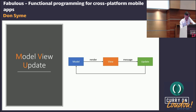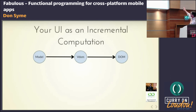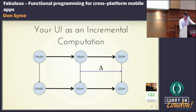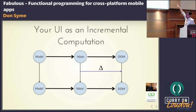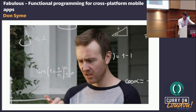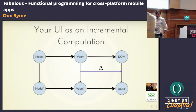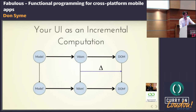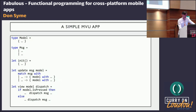Instead, you do model-view-update. These slides are from Yaron Minsky's talk at Strange Loop, where he discusses the same approach applied to the DOM in web programming. Effectively, each iteration you get a new model, compute a new virtual DOM, compute a diff between the old virtual DOM and the new one, and apply that diff to the actual mutable DOM in your UI, which then gets picked up by the rendering engine in the browser. The key part is the recomputation of the virtual DOM, and this turns out very practical for a wide range of information-based apps.